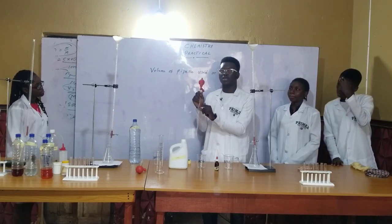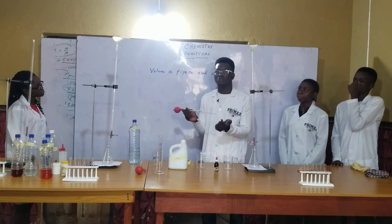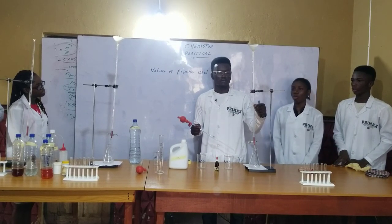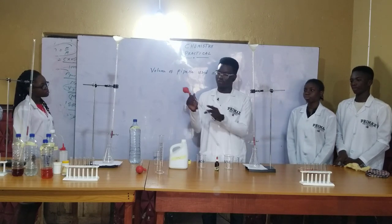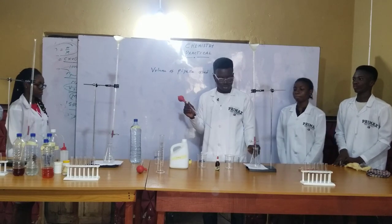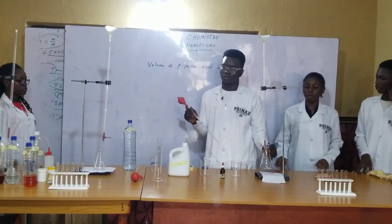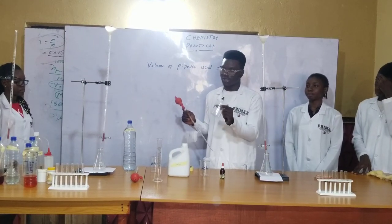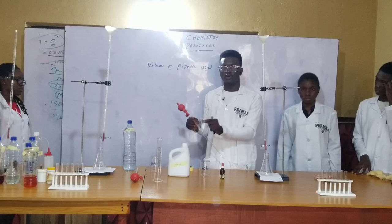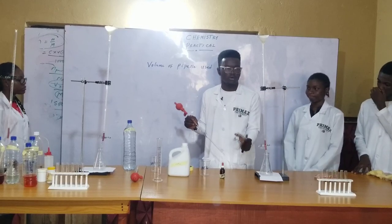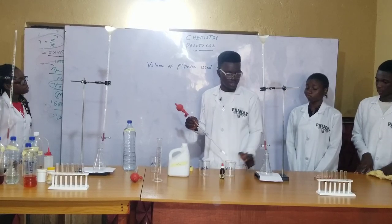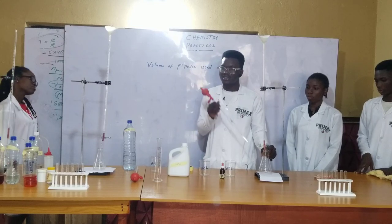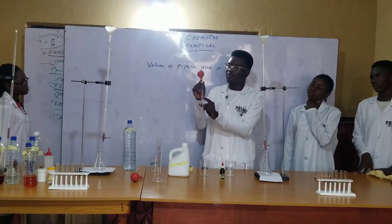This is called the pipette. This is called the conical flask. And this is a beaker — you use your beaker to hold a volume of a particular acid or base. The conical flask is where the reaction takes place. In this pipette, some schools might use 20 ml, so you can't use their 20 ml for your own calculation. Whatever you use for your experiment is what will be involved in your calculation.